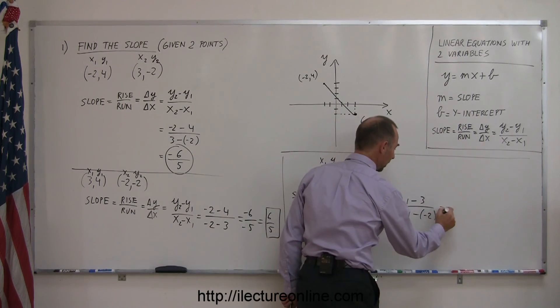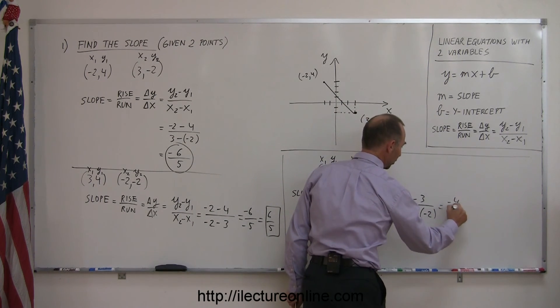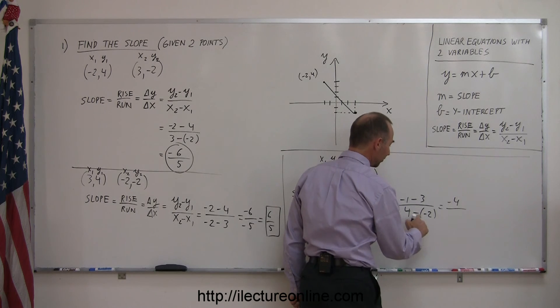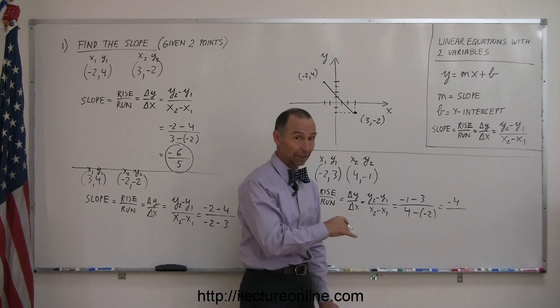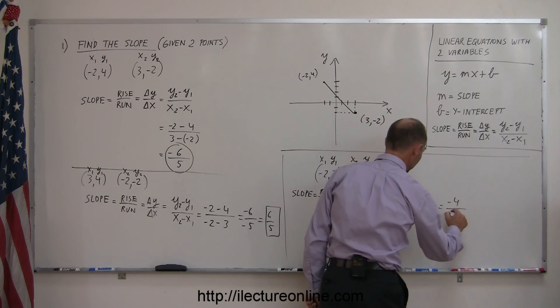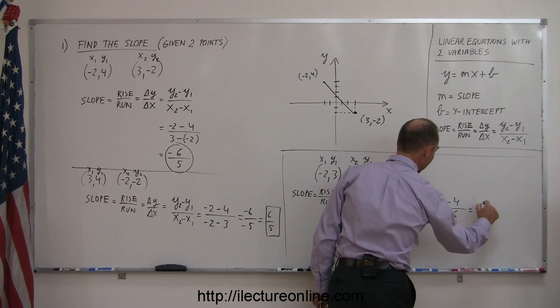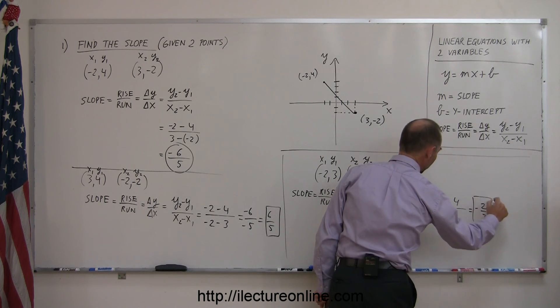All right. Working this out, you get minus 1, minus 3 is minus 4, divided by a 4, a minus a minus 2. That's the same as adding the positive number. So, that's 4 plus 2, which is 6, or negative 2 thirds. So, there's the slope between those two points.